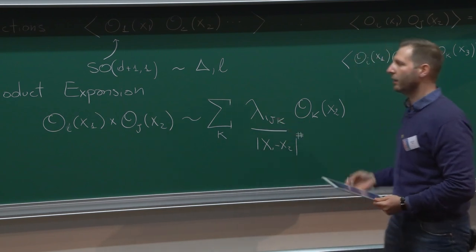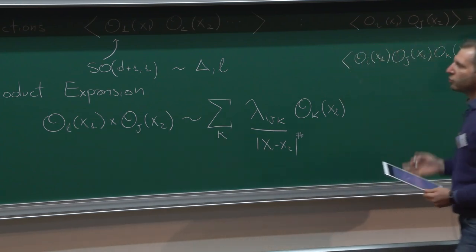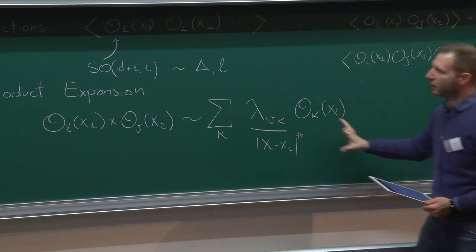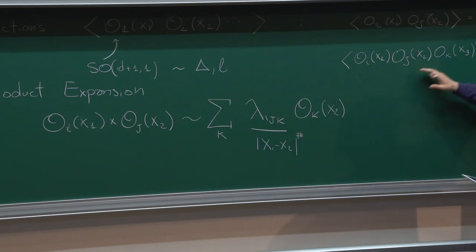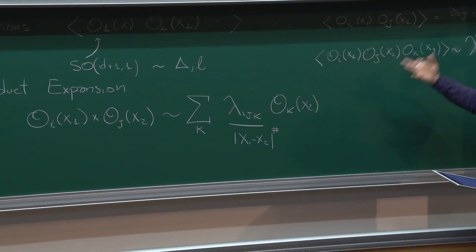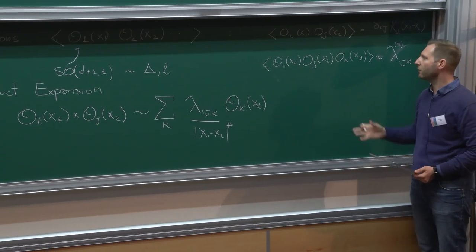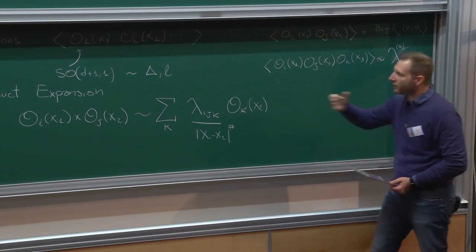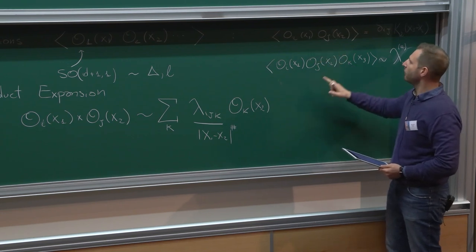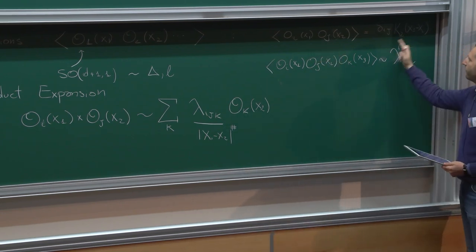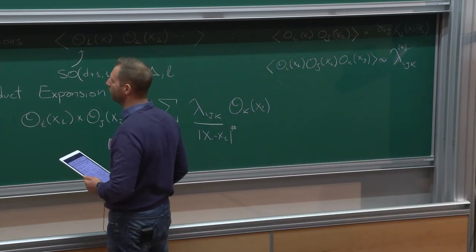By using this OPE, you can reduce any correlation function of more than three objects to infinitely many correlation functions with fewer operators, which you know. Iteratively, in principle, if you know all the operators and all the OPE coefficients, you can compute everything — it might be a very complicated task, but in principle you can.